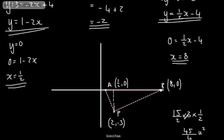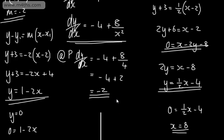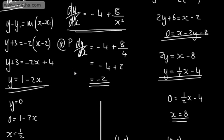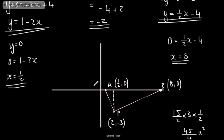We drew a sketch, found the points of intersection with the x-axis, used the perpendicular height and base to calculate the area. For part C, for 4 marks, the area of triangle APB is 45 over 4 units squared.